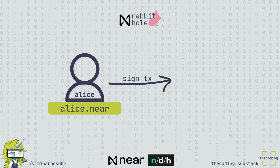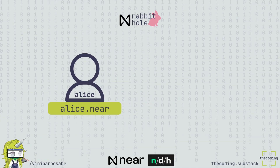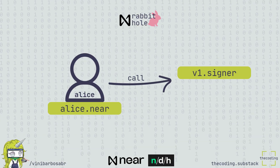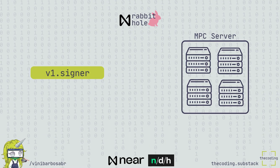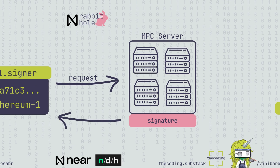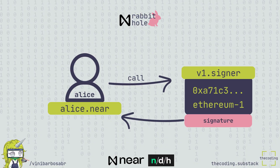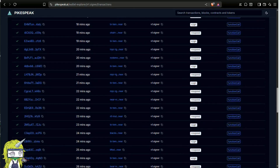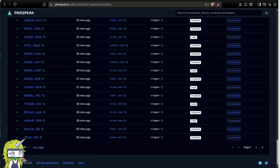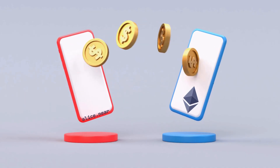For example: Alice.Nier wants to sign a transaction on Ethereum. She calls the v1.signer smart contract to do it. The derivation path will generate an Ethereum address via the ethereum1 string from Alice.Nier. The MPC service will listen to this request, create the signature and store it in the smart contract, which returns the signature back to Alice.Nier, who will send it to Ethereum via the ethereum1 derivative address. Everything is registered on-chain, but abstracted to the user — all Alice does is ask the app to send an Ethereum transaction with Alice.Nier, and she sees it going through.